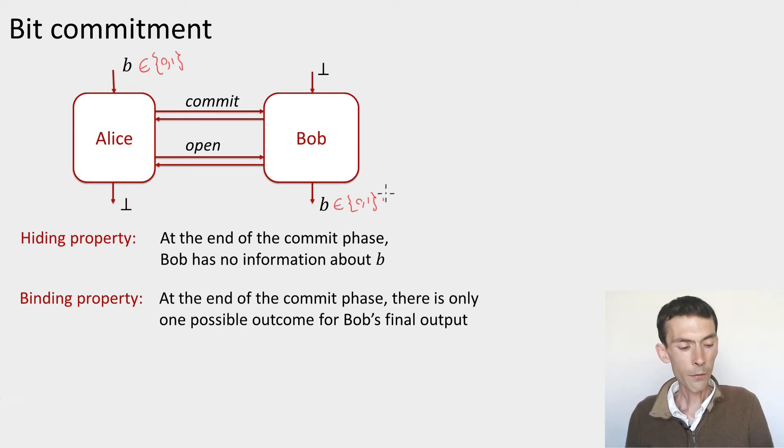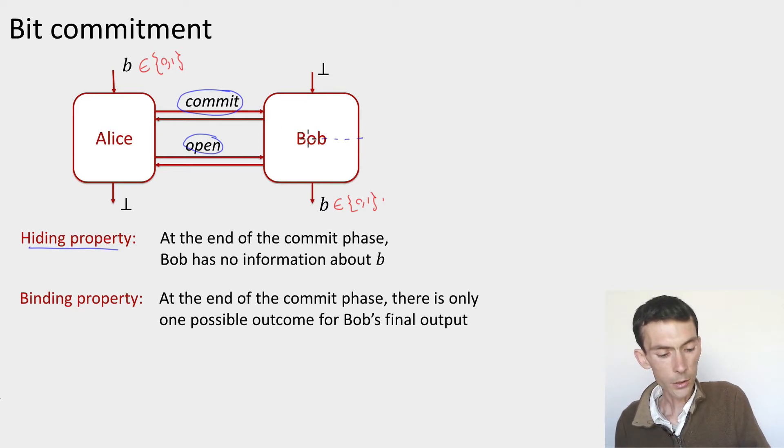Now the security is defined in two phases. Corresponding to phases of the protocol, there should be the commit phase followed by an open phase. And the security requirements are first the hiding property, which is that at the end of the commit phase, Bob still has no information at all about Alice's bit b. So that's at this stage here.